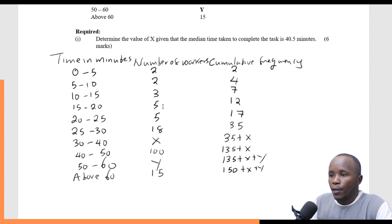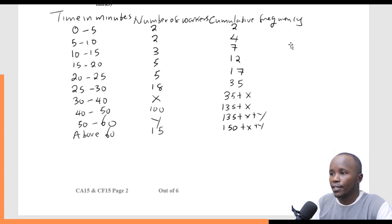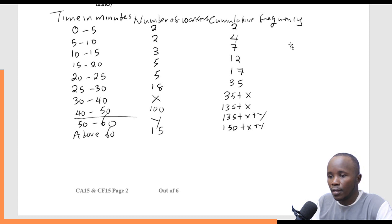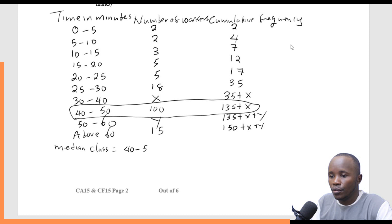Now, we are looking for the value of X given that the median is 40.5 minutes, so we ask ourselves: where is the class that the median belongs to? Since 40.5 falls in the interval from 40 to 50, the median class is 40 to 50.